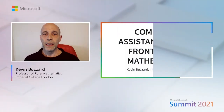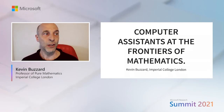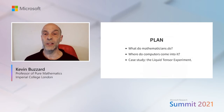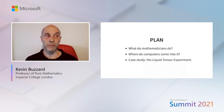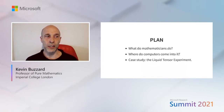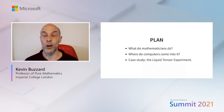Thank you very much, Leo. My name is Kevin Buzzard and I'm a professor of pure mathematics at Imperial College in London. In the next 15 minutes, I'm going to say something about what modern mathematics is and what mathematicians do, something about the relationship between mathematicians and computers, and I'll end by describing an ongoing project on the boundary between mathematics and computer science.